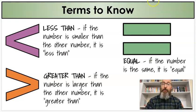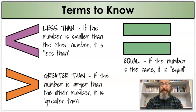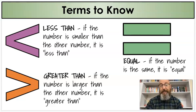Last, we have equal. You've probably seen equal a thousand times. If the number is the same, it is equal, or sometimes called equal to. Equal means something is the same as the other — two plus three is the same as five, and five is the same as two plus three, because they equal each other.